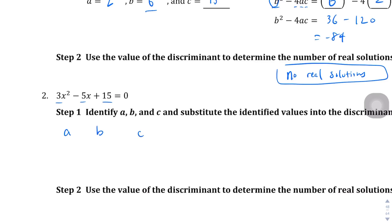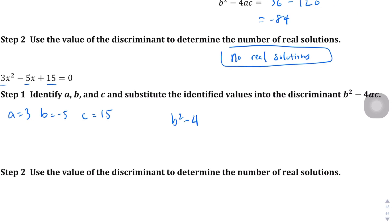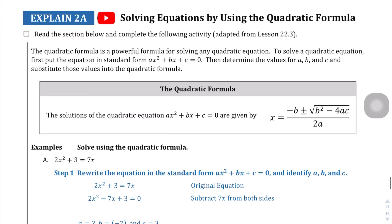Question number two: identify a, b, and c. a is 3, b is negative 5, c is 15. Plugging into the discriminant: negative 5 squared minus 4 times 3 times 15, which is 25 minus 180, giving us negative 155. Because it's less than zero, there are no real solutions.